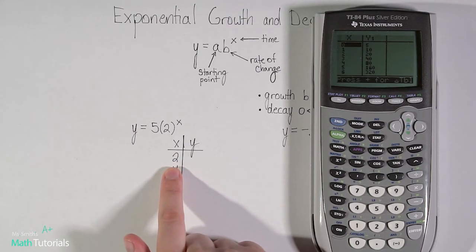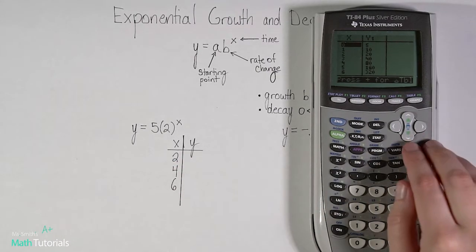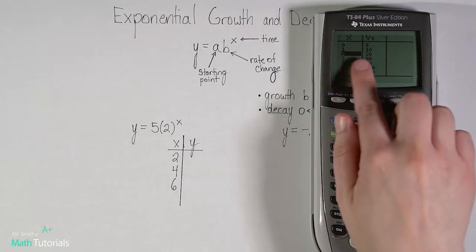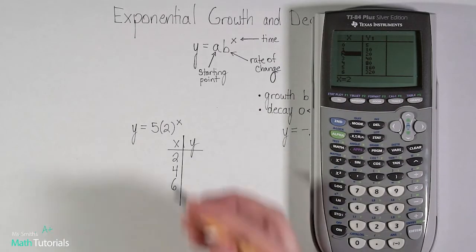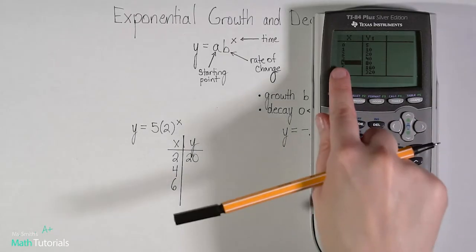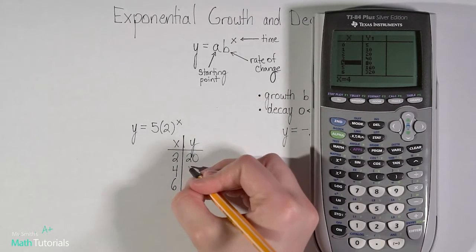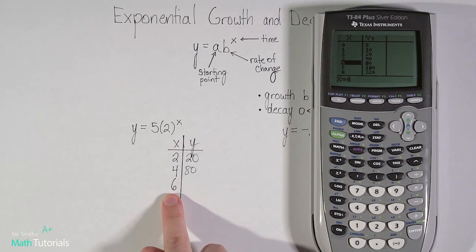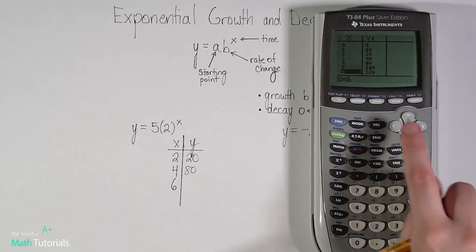So in this case, it's wanting to know, what if x is 2? So let's find that. Where is x equals 2? Right here. What is y? 20. What if x is 4? What is y? 80. And what about if x is 6? 320.